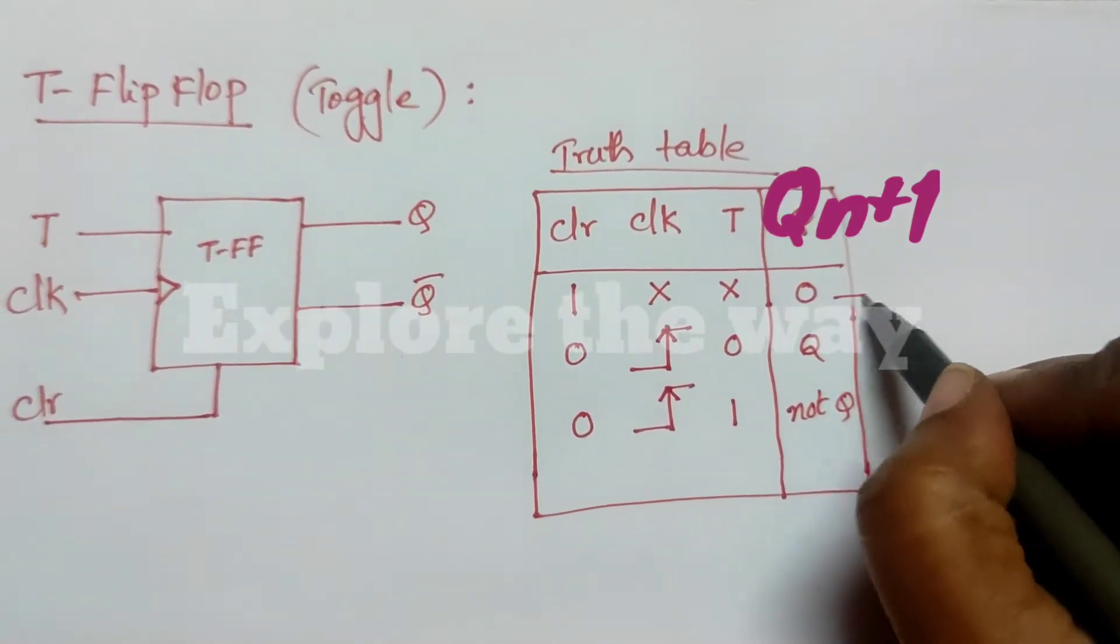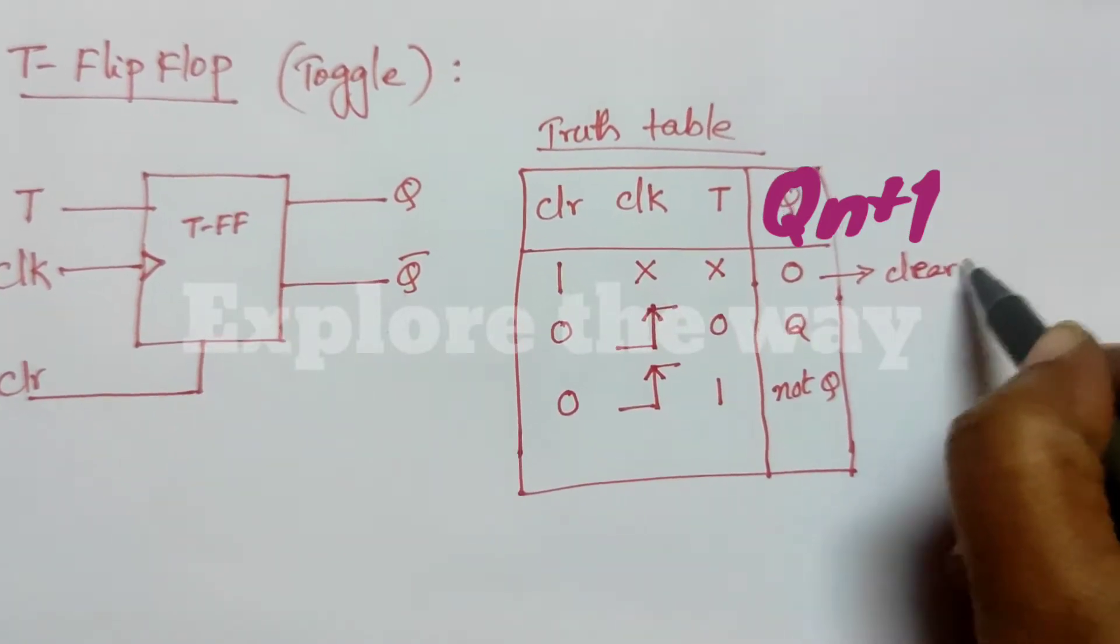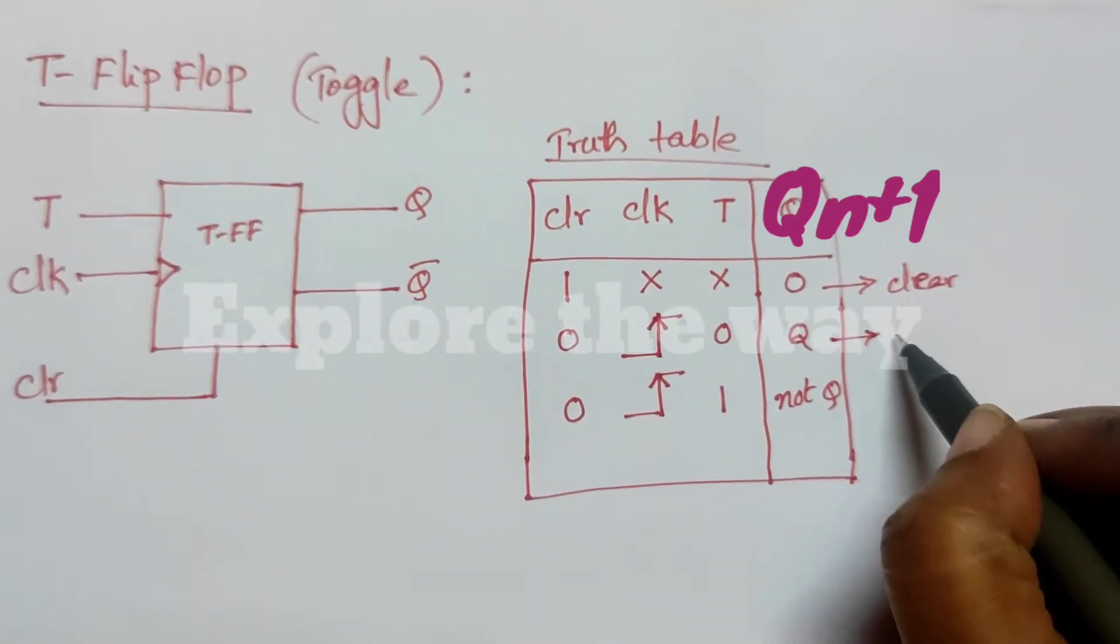This state is called clear. That means it clears the flip-flop. And this state is called no change.